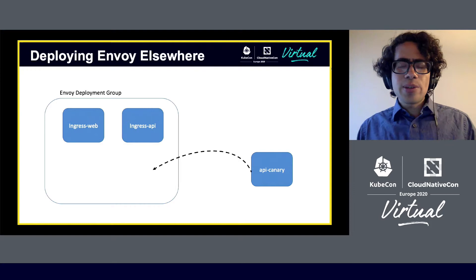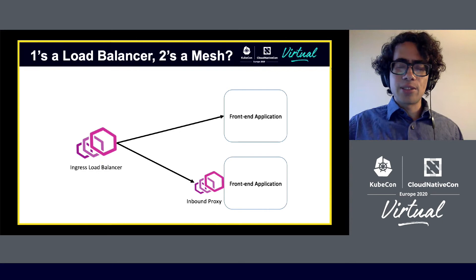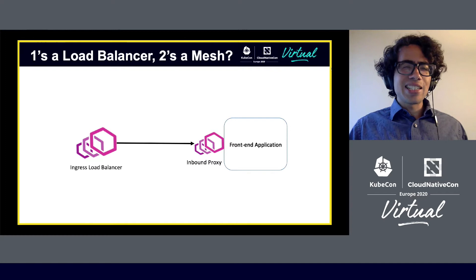Once we had a successful configuration going, we adjusted our ingress load balancers to recognize this new deployment environment that had Envoy terminating TLS. Using Envoy's weighted routing, we gradually shifted traffic from non-Envoy TLS to Envoy with TLS. And eventually we got something that, if you squint a little bit, it's kind of starting to look like a mesh — we have Envoy on both ends proxying traffic.